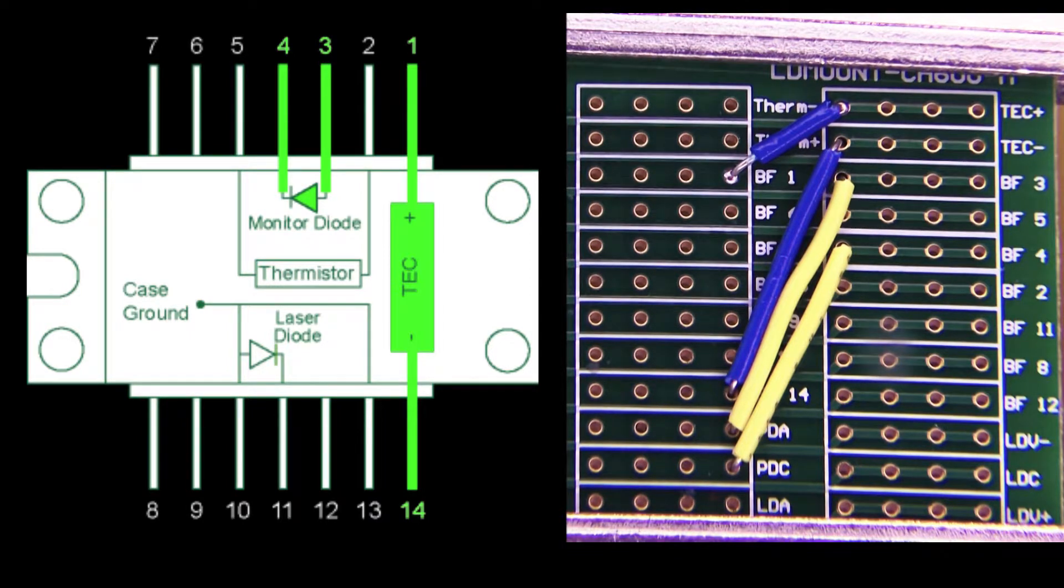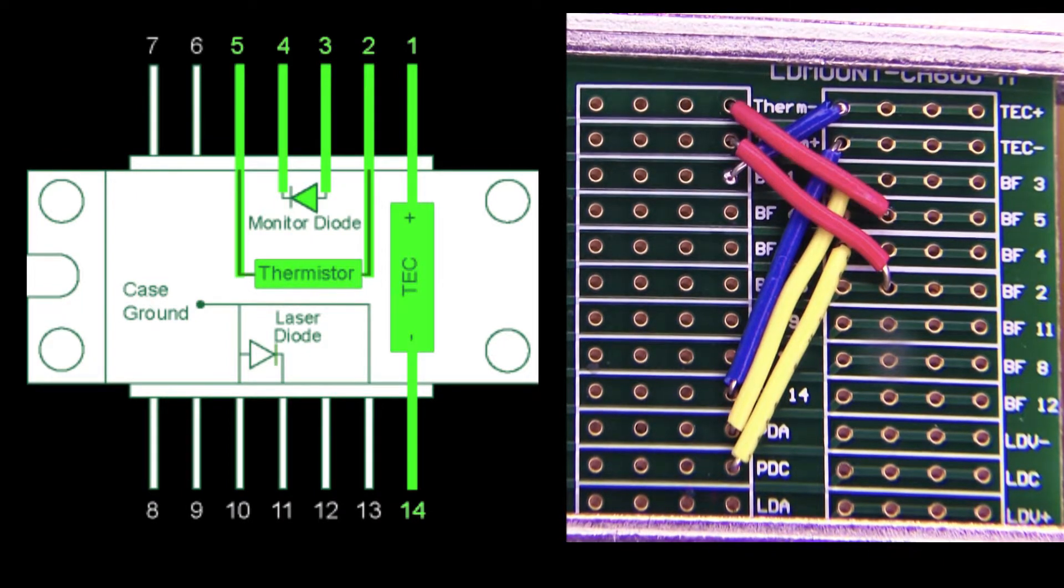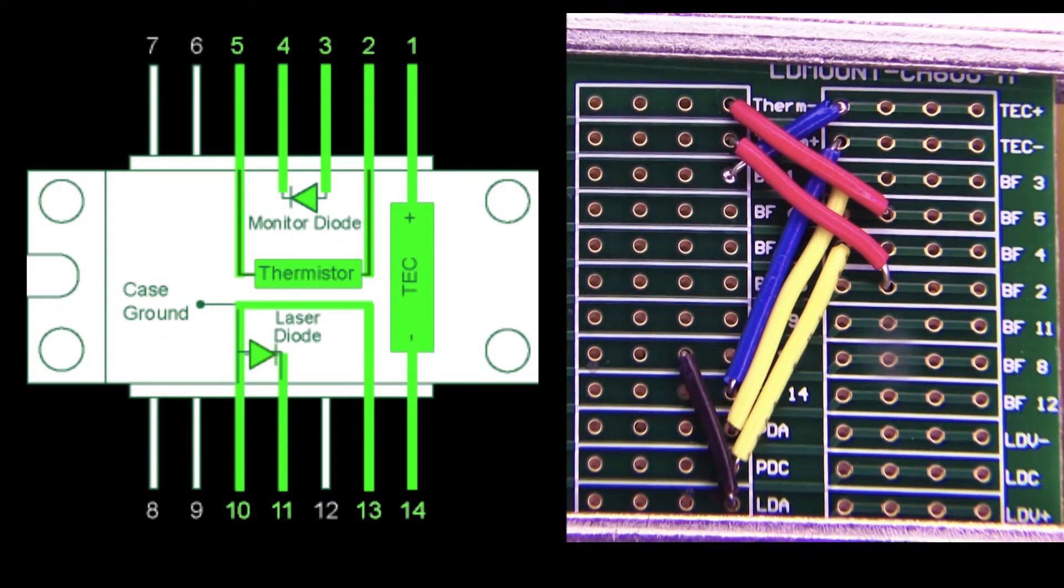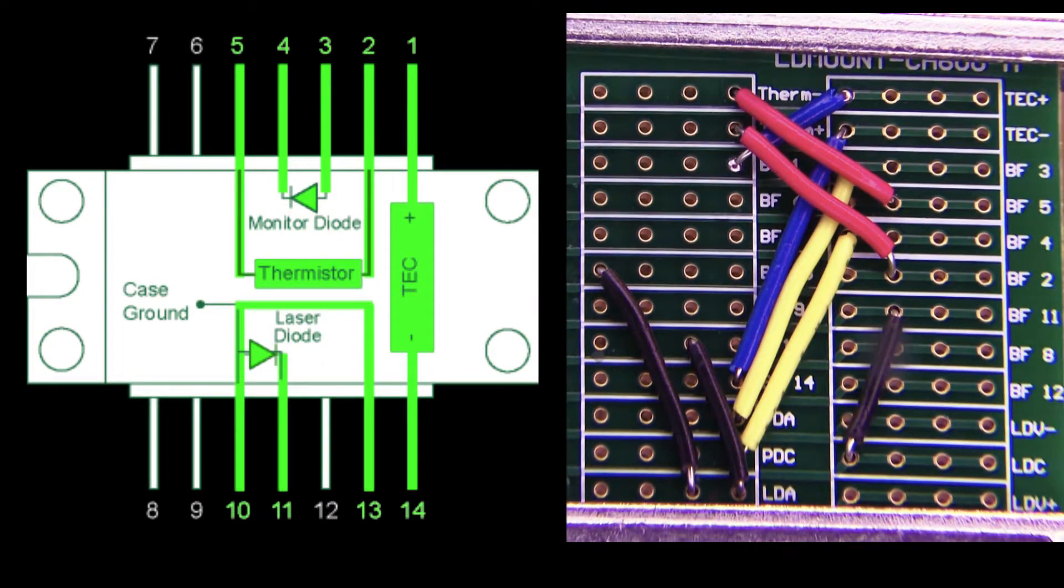The remaining connections follow the same procedure. Solder one terminal of the thermistor to BF2. Solder the other terminal to BF5. Connect LD-A to BF10 and BF13. Connect LD-C to BF11.